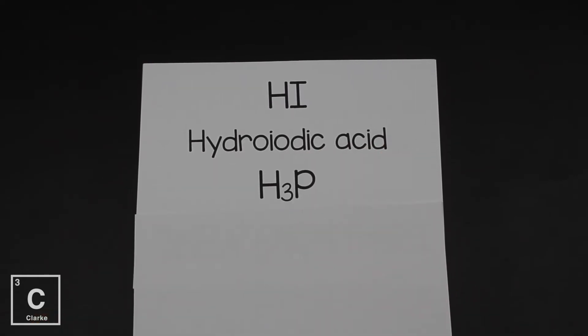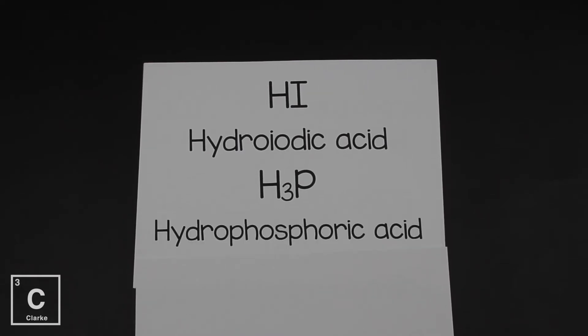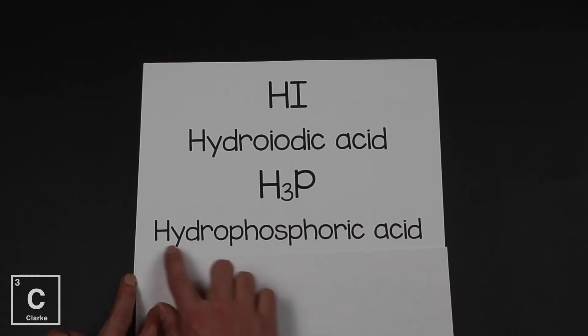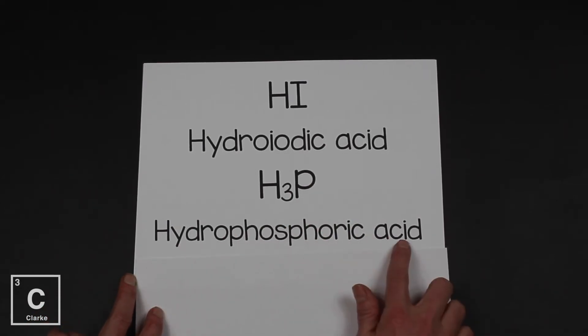Let's try another one. Here we have H3P. Again, P is a non-metal from the periodic table. That's how we know this is a binary acid. And we need to use hydro and ic. So we have hydrophosphoric acid. The prefix hydro, the root word from phosphorus, phosphor, ic, hydrophosphoric acid.